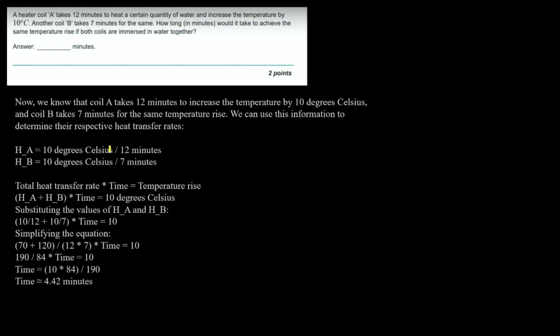Next question: Heater coil A takes 12 minutes to heat a certain quantity of water and increase the temperature by 10 degrees Celsius. Another coil B takes 7 minutes for the same. How long would it take to achieve the same temperature rise if both are immersed in the water together? So basically two heater coils are each raising the temperature by 10 degrees Celsius — A takes 12 minutes and B takes 7 minutes.